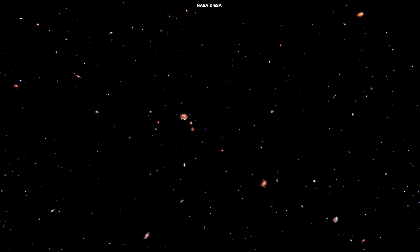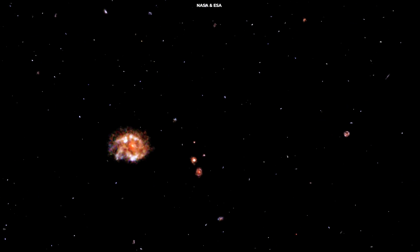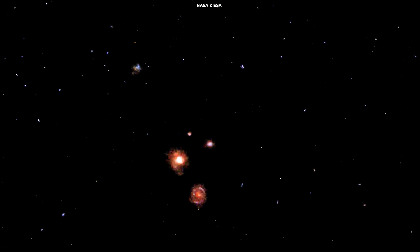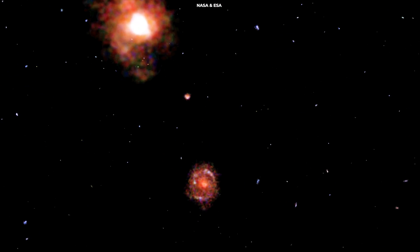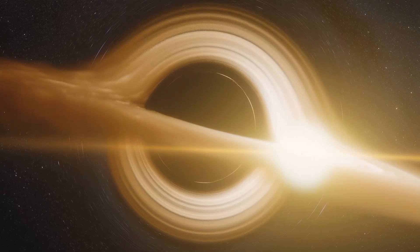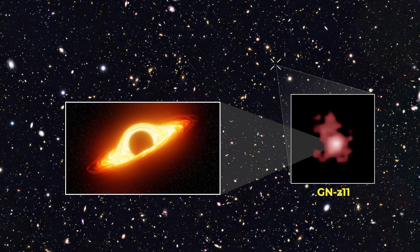And also, by observing galaxies at different distances, Webb effectively looks back in time, capturing different stages in the universe's evolution. But there's another mystery that Webb is helping us solve: the existence of supermassive black holes in these early galaxies. Take GNZ-11 galaxy, for example.